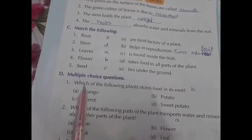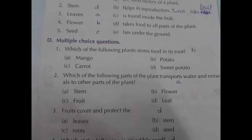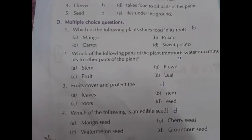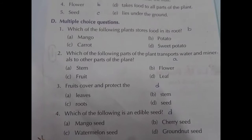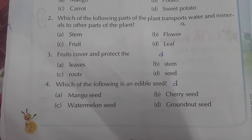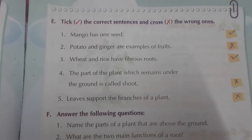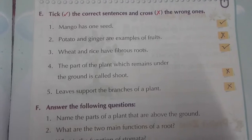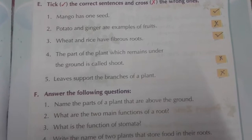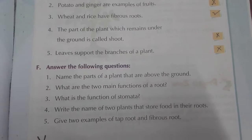Multiple choice questions: Which of the following plants stores food in root? Potato. Which part of the plant transports water and minerals to other parts? Stem. Fruits cover and protect the seed. Which of the following is an edible seed? Groundnut seed. Page number 83, tick right or cross: Mango has one seed — right. Potato and ginger are examples of fruits — wrong. Wheat and rice are fibrous roots — true. The part of the plant which remains under the ground is called shoot — wrong. Leaves support the branches of a plant — wrong.